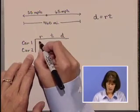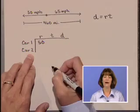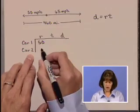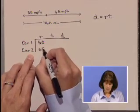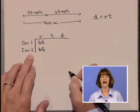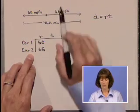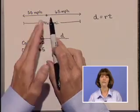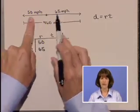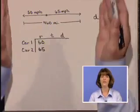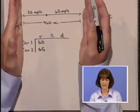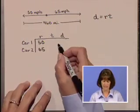Let's let car one be the one traveling at the rate of 50 miles per hour, and car two be the car traveling at 65 miles per hour. Now the question that we're asked to find is time. They both start at the same point when the time clock starts, and then they travel both for the same amount of time until time is stopped when they're 460 miles apart.